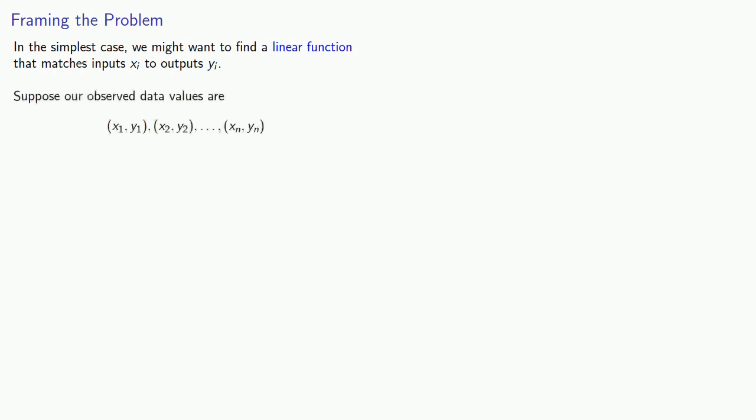So let's try to set up this problem. In the simplest case, we might want to find a linear function that matches inputs xi to outputs yi. Suppose our observed data values are a set of ordered pairs, and we want to predict the y's from the x's using a linear function. The function will have the form y equals a1x plus a2, where a1 and a2 are unknown parameters.